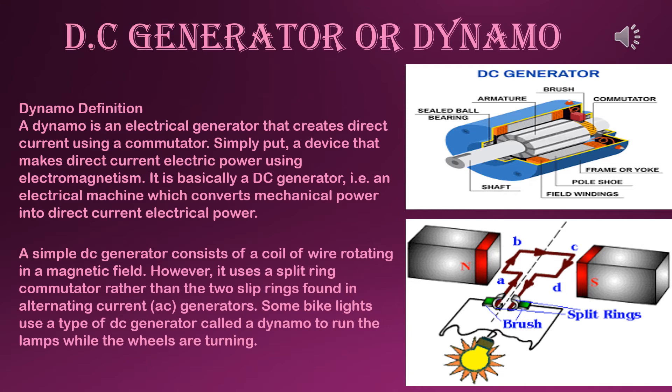Now see the DC generator diagram — armature, brush, commutator, shaft — everything has been shown. The next diagram shows the mechanism and how the bulb is glowing. Here also two magnets are there, one north pole and one south pole. In between, the commutator and armature ABCD are there, with brushes and split rings.